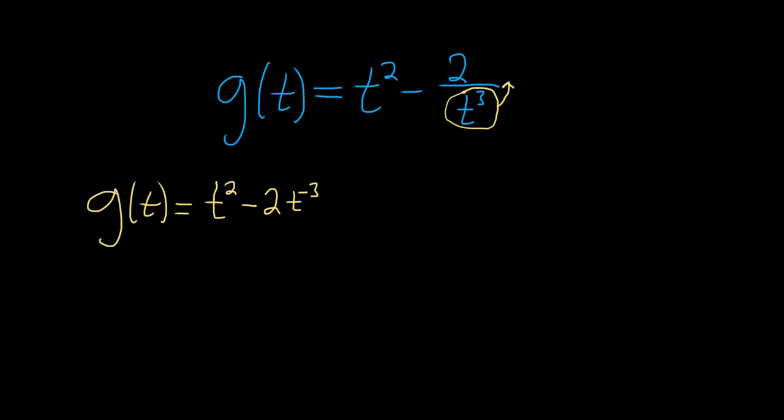Okay, so now we're in a good place, so let's take the derivative. So g prime, again the prime symbol indicates that we're going to take the derivative, is equal to.